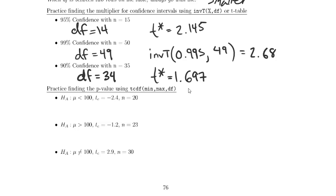In this first case, we have the alternative hypothesis is mu less than 100. Our test statistic is negative 2.4, and our n is 20, meaning that our df is 19.